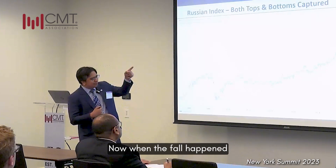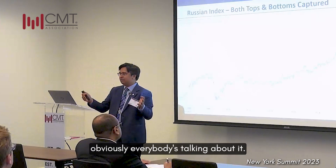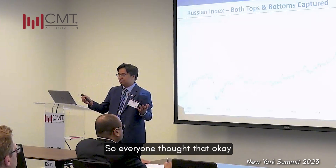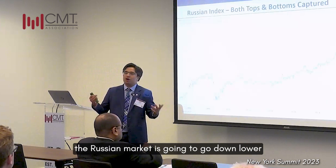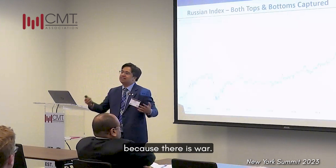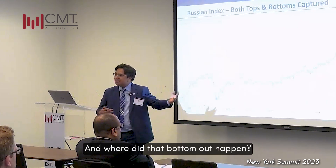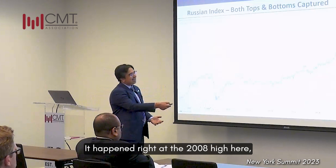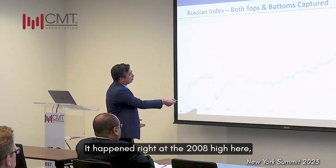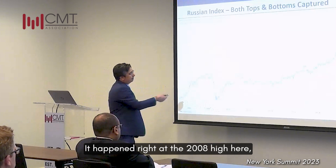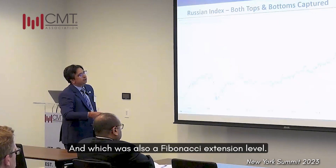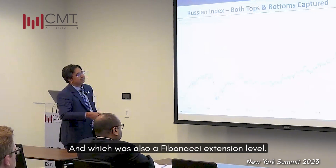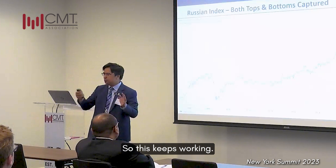Now when the fall happened — Russia, Ukraine — obviously everybody was talking about it. Everyone thought the Russian market was going to go down lower because there is war. And where did that bottom happen? It happened right at the 2008 high, which was also a Fibonacci extension level. So this keeps working — these are just amazing data points.